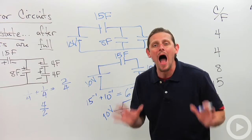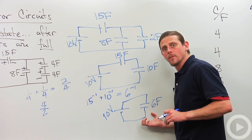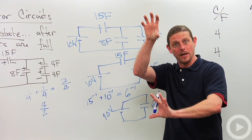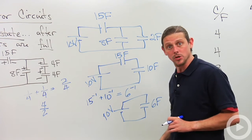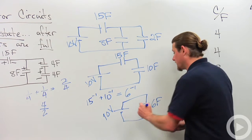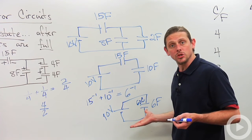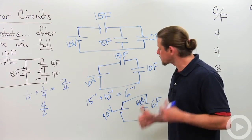Now we need to know how much charge is on our effective capacitor. Well, potential difference is Q over C. So Q must be C times potential difference. 6 times 10 gives us 60 coulombs. And now we'll just reconstruct the circuit. I'll show you how to do this and then we'll look at the answers.